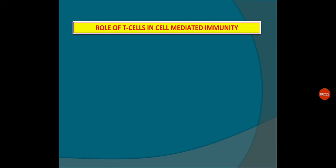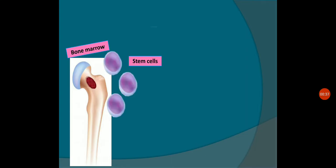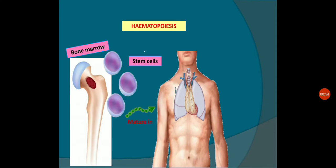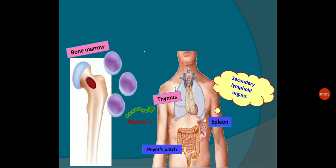In case of cell-mediated immunity, T-cells play a very important role. T-cells are produced from the primary lymphoid organ, that is the bone marrow. They are considered as stem cells and that process is known as hematopoiesis — the process by which these stem cells are produced. Later on, these T-cells will get matured in the thymus, which is the site where T-lymphocytes mature.